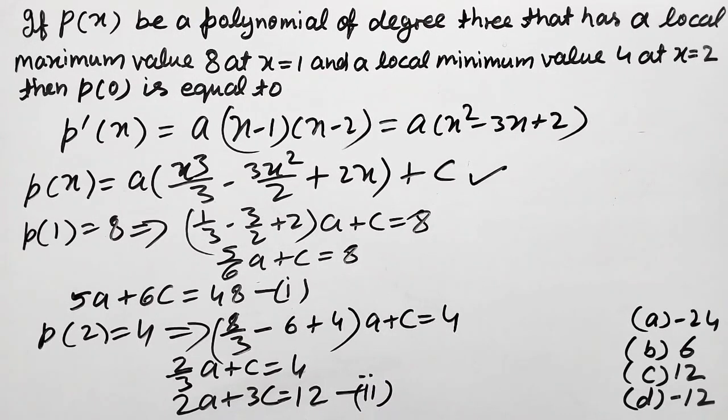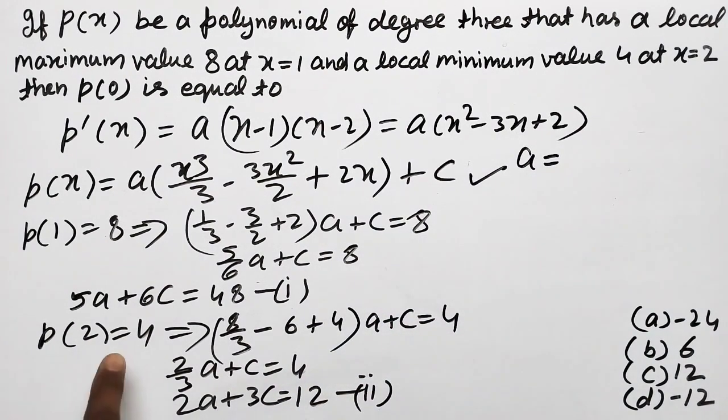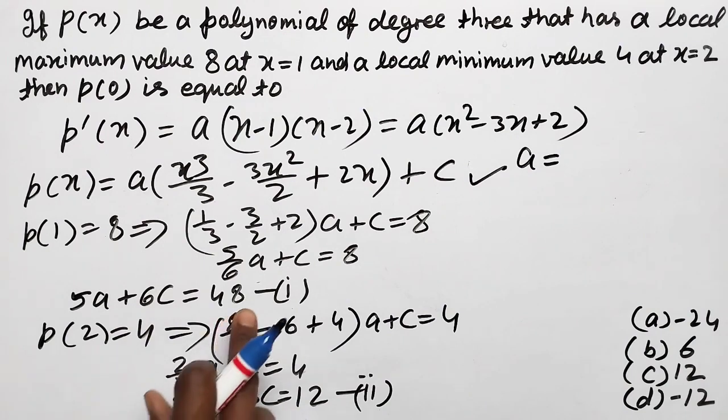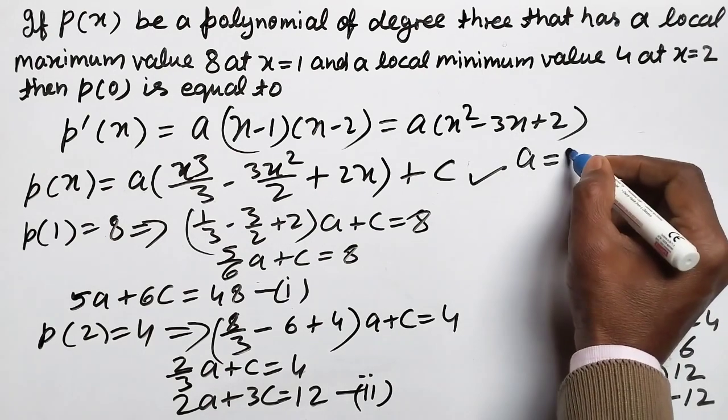Now subtract double of second from first, so 5A minus 4A, 6C minus 6C cancel, 48 minus 24, this gives 24.